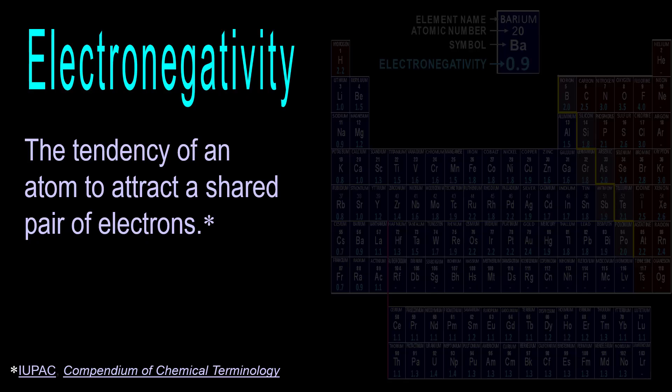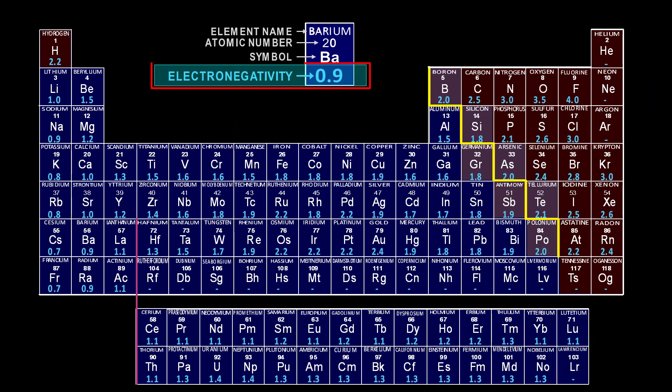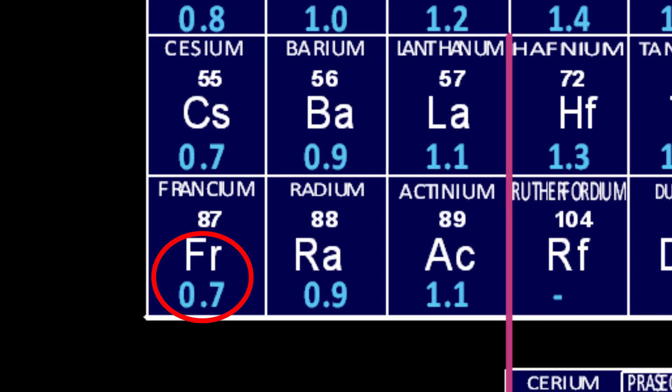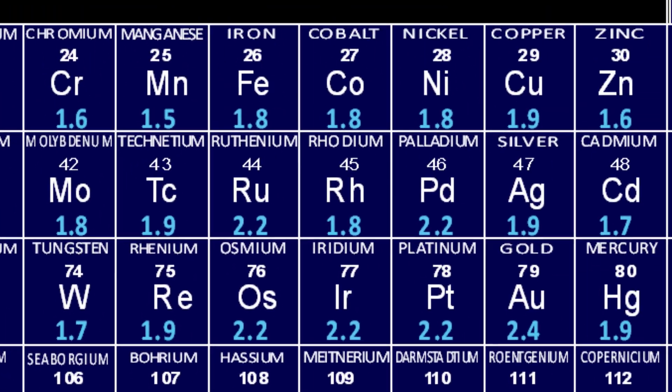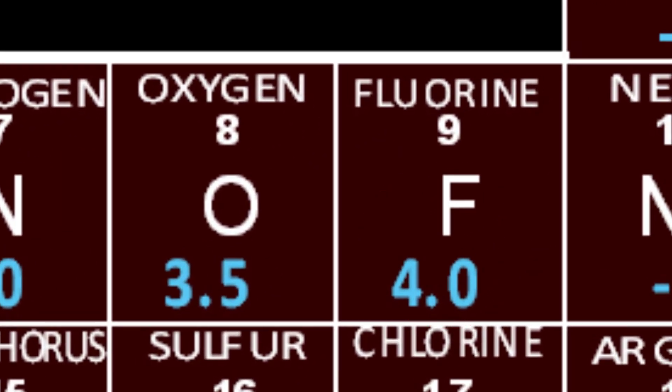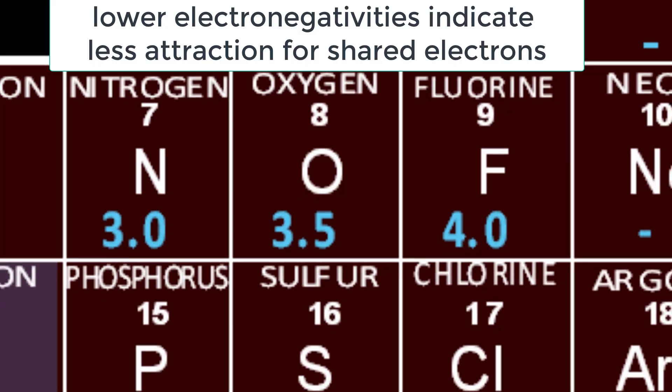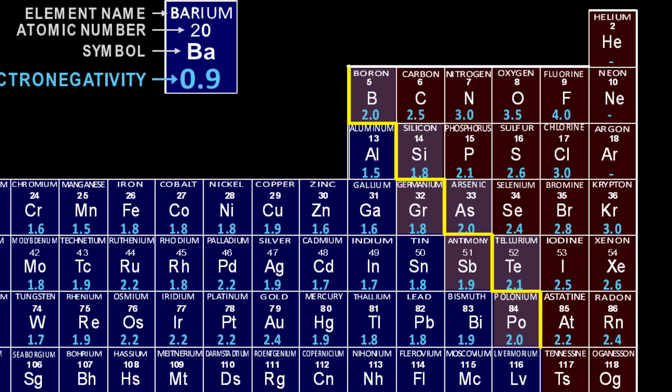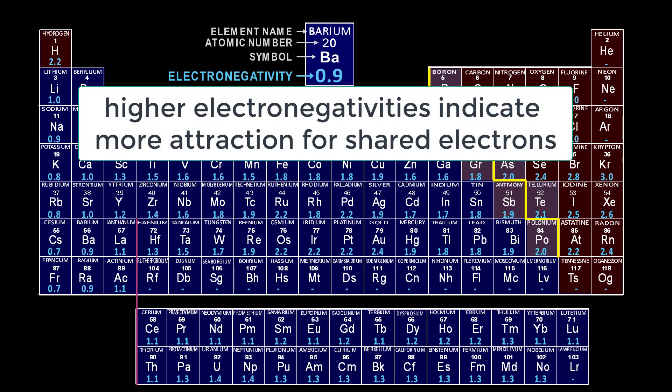Electronegativity is defined as the tendency of an atom to attract a shared pair of electrons. It is a value without a unit, just a number that each element has, derived empirically, from a low of 0.7 to a high of 4.0. Lower numbers indicate less attraction for shared electrons, and higher numbers indicate more attraction for shared electrons.